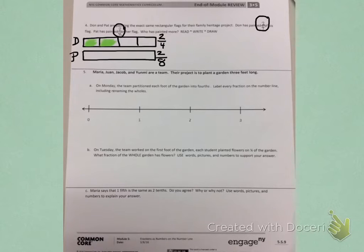Pat has shaded, has finished two-eighths, so I will break the rectangle in half, then into fourths, then break those fourths in half to create eighths. Since Pat has done two-eighths, I will shade one-eighth, two-eighths.